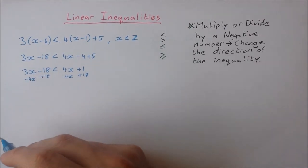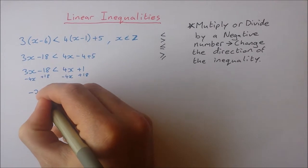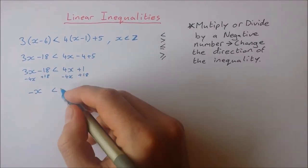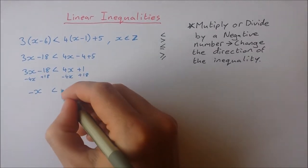So I get 3x minus 4x which is minus x. 18 plus 18 is 0. Less than 4x minus 4x is 0. 1 plus 18 is 19.